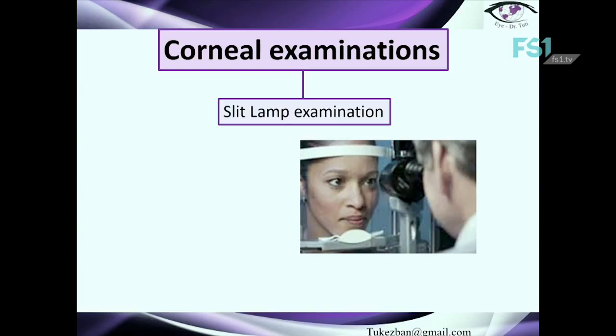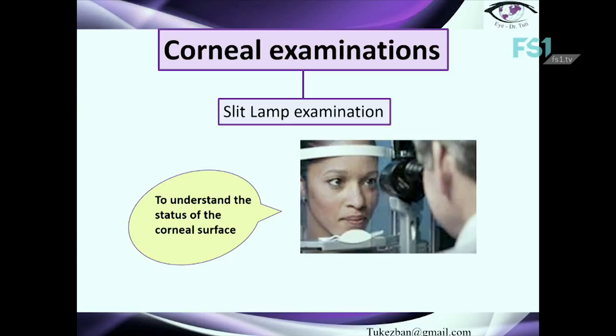The second part is going to be about examinations. Before starting corneal refractive examinations, the first thing we have to do is the slit lamp examination. Slit lamp examination will help us understand the status of the corneal surface — if there is any scar, dry eye syndrome, or tear film instability — because all these factors may affect the clear image of the cornea when we analyze it for refractive surgery.